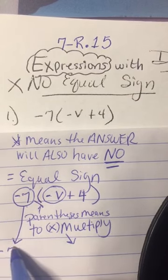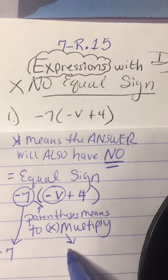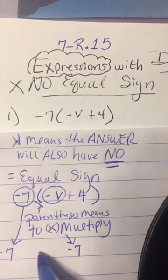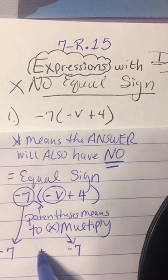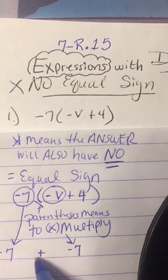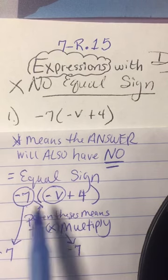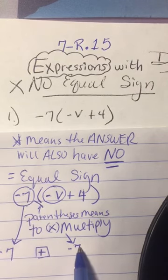So I'm going to write negative 7 here, and I'm going to write negative 7 here. And I'm going to put a plus sign in between. So this is always your formula for distributive property. The outside number, bring it down twice.